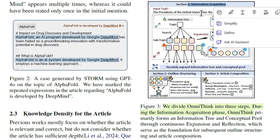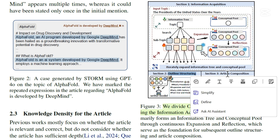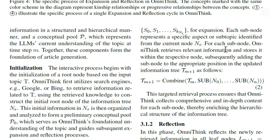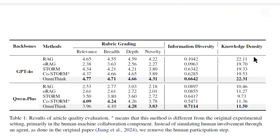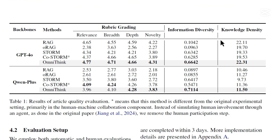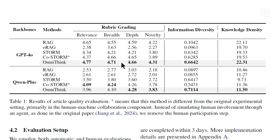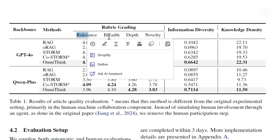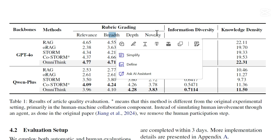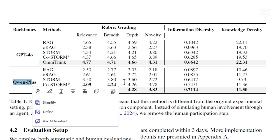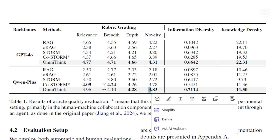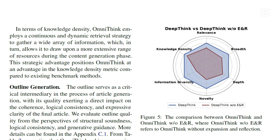The three steps are: information acquisition, outline structuring, and article composition. Looking at the results, when applying OmniThink with GPT-4o as the backbone, we get very good scores for relevance, breadth, depth, and novelty of the generated content. For Qwen Plus as well, depth and novelty scores are strong. With OmniThink enabled versus without, there is a clear expansion in the breadth of information that can be generated.